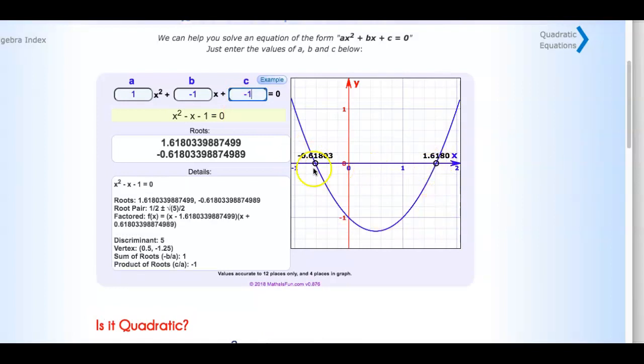It shows us the graph, exactly where the solutions are. It gives us the decimal, the long decimal here. But if you notice right there, it gives you a good answer. It's 1 half plus or minus the square root of 5 over 2. Or you could write it like this: 1 plus or minus the square root of 5, the whole thing over 2. It tells you that the discriminant is 5. That's a good thing to know. It shows you where the vertex is. If you guys want to use that, feel free.